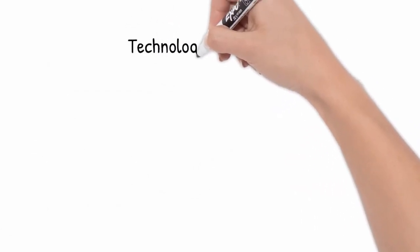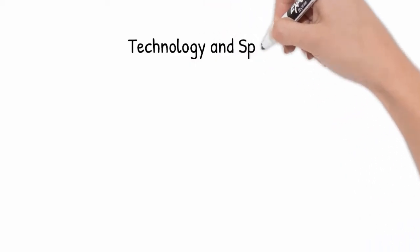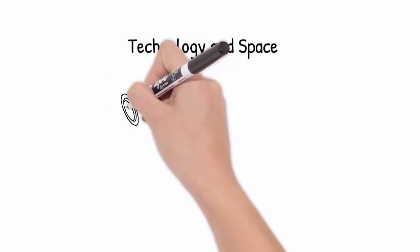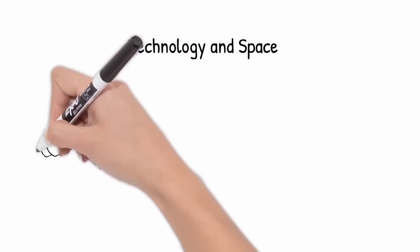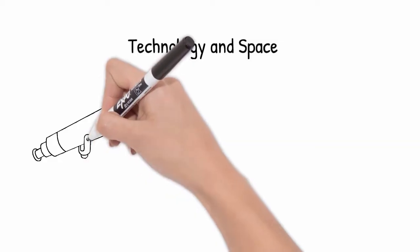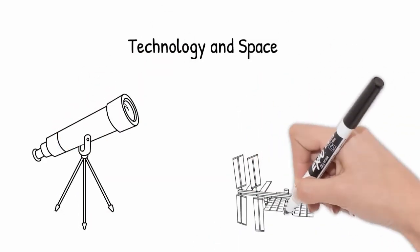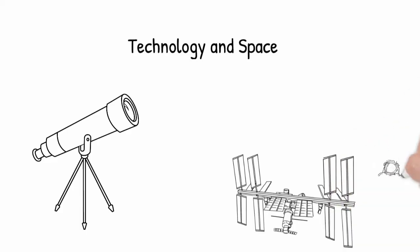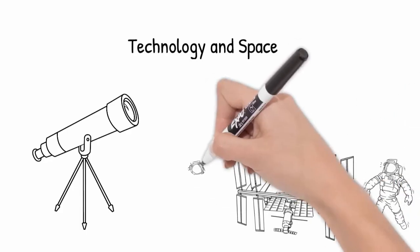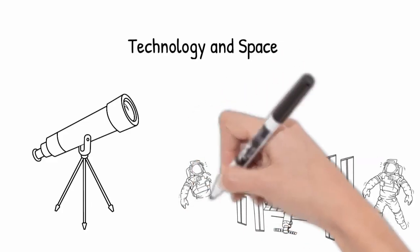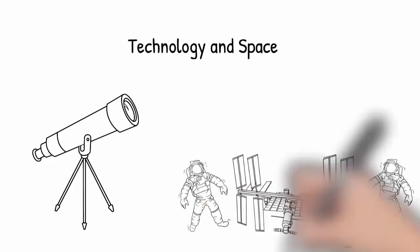Satellites are really important in helping us understand our solar system and our own planet as well. Hopefully from this video you've got a deeper understanding of how important technology has been for helping us understand our solar system and further out, but also more information about our Earth. It's helped you understand a bit more about telescopes and satellites and what they've been able to help us discover.